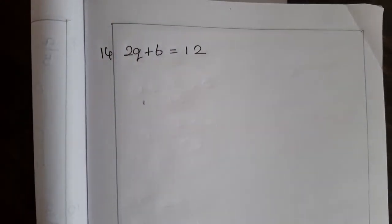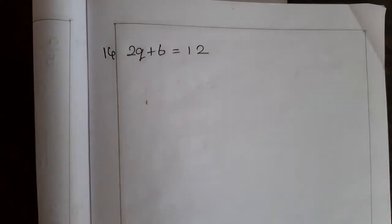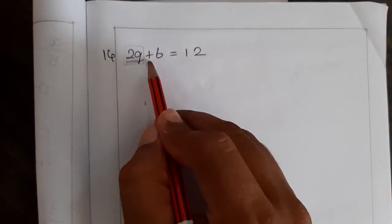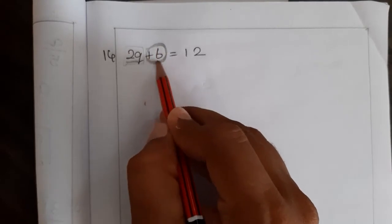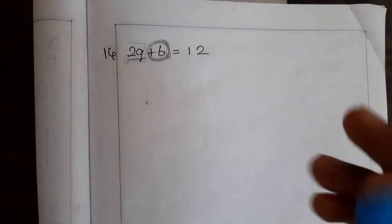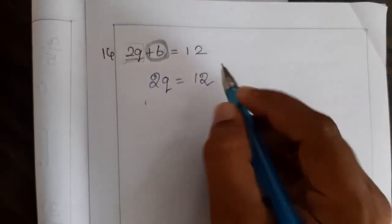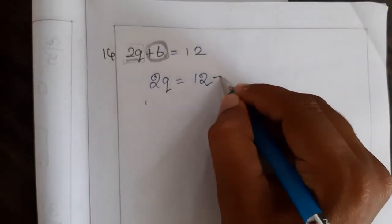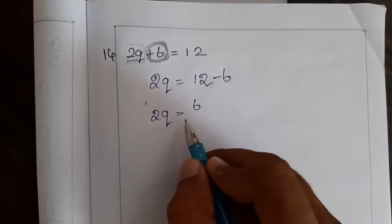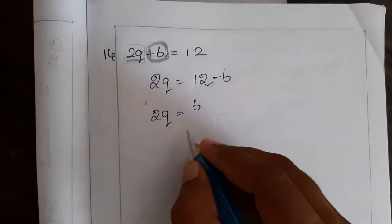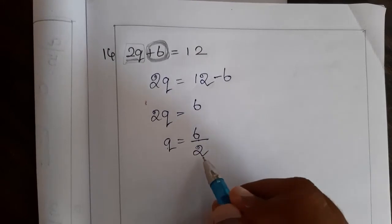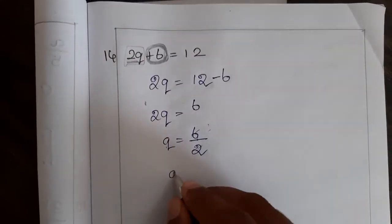Next problem: 2q plus 6 is equal to 12. You can see two terms. Always remember, don't take the 2 first because it is along with the term q. First you have to transpose the number only — the term which has only number. Only number is plus 6, so we will transpose that side. 2q will remain the same, 12 also remains the same side. Plus 6 if we transpose, it will become minus 6. So 2q is equal to 12 minus 6, which is 6. Now 2 into q — if you transpose, it will become division. So q is equal to 6 divided by 2, which is 3.